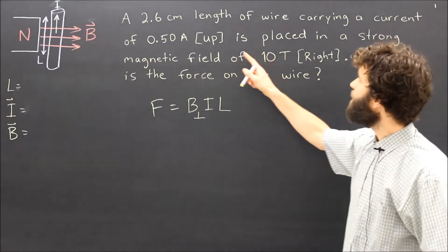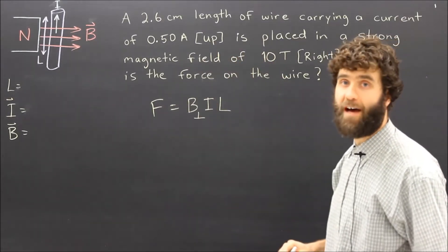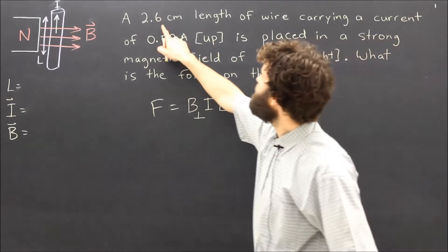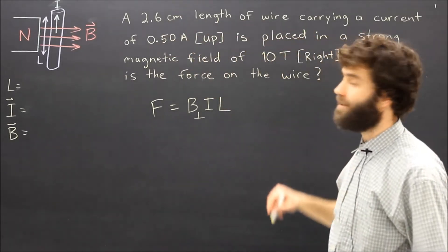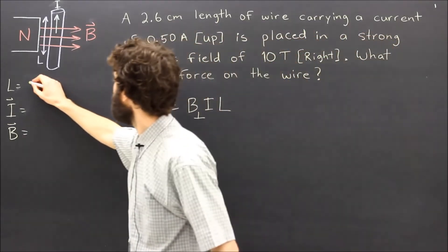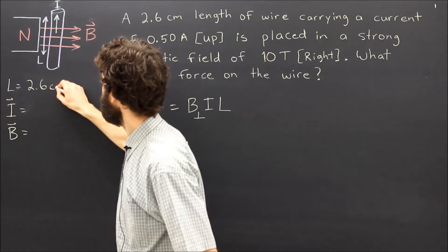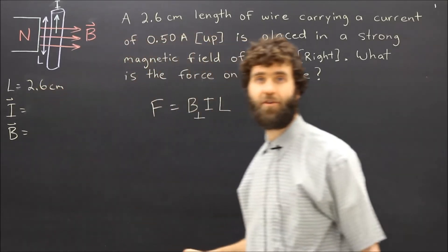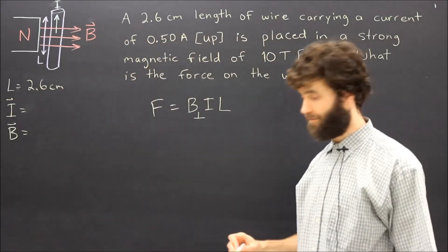Here we can look at our problem and determine the value for our variables. A 2.6 centimeter length of wire, so we write that down as 2.6 centimeters. We want to convert that into SI base units of meters.